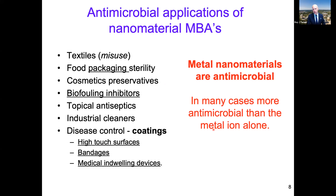Where do we see metal nanomaterials used as antimicrobials? We see it in the textile industry — which is actually a misuse of them — as well as food packaging, stability, cosmetic preservatives, biofouling prevention, topical antiseptics, industrial cleaners, and disease control coatings. The underlined items are ones we're trying to put applications forward in.